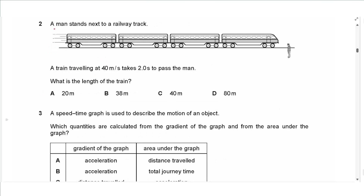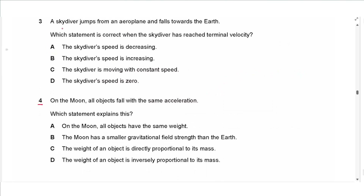Question 2: A man stands next to a railway track. A train traveling at 40 meters per second takes two seconds to pass the man. We have speed and time and need the length of the train, which is distance. Using distance equals speed multiplied by time: 40 times 2 gives 80 meters.